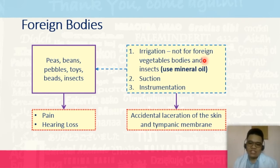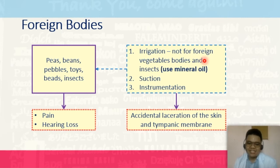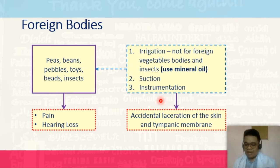What is our management? Irrigation is done using water; however, not for foreign vegetable bodies and insects. If you use water to irrigate vegetable matter or insects, the tendency is that they will swell, and you will not be able to pull them out. Instead, use your mineral oil, then suctioning and instrumentation. Instrumentation is best done by ear doctors — your ENT practitioners, referred to as otolaryngologists. If not, this could lead to accidental laceration of skin and the tympanic membrane, aggravating the patient's signs and symptoms.